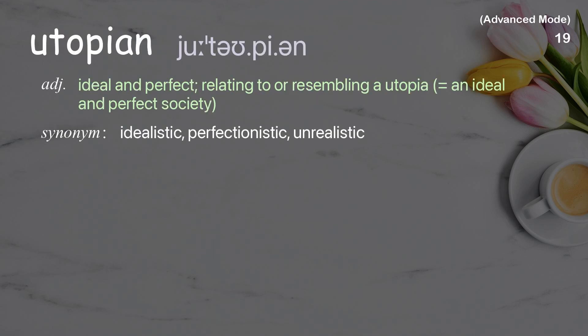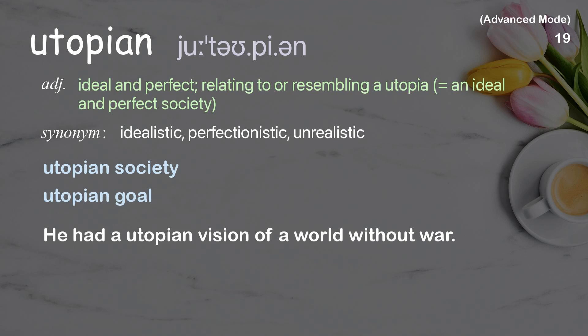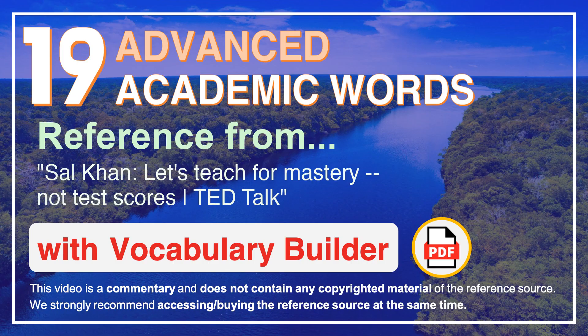Utopian: ideal and perfect; relating to or resembling a utopia, which is an ideal and perfect society. Examples: utopian society, utopian goal. He had a utopian vision of a world without war.